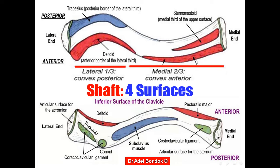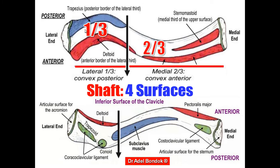The shaft has four surfaces: anterior, posterior, superior, and inferior. The shaft is divided into medial two-thirds and lateral one-third. The medial two-thirds are convex anteriorly; the lateral one-third is convex posteriorly. The clavicle is the most fractured bone, and the fracture is usually at the junction between the medial two-thirds and the lateral one-third. The inferior surface has three features: the medial third has an impression for the costoclavicular ligament; the lateral one-third has the conoid tubercle and trapezoid line — conoid tubercle for the conoid ligament, trapezoid line for the trapezoid ligament, and the two ligaments form the coracoclavicular ligament. The middle third has a groove for the subclavius muscle.